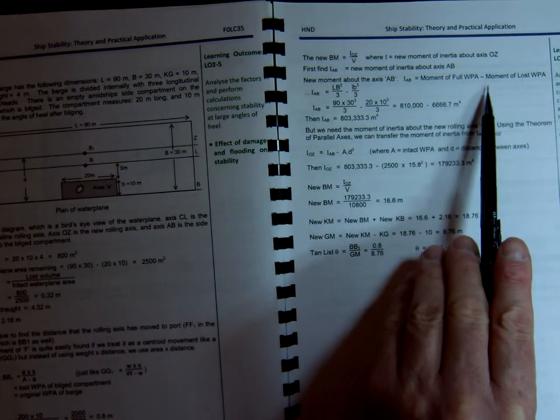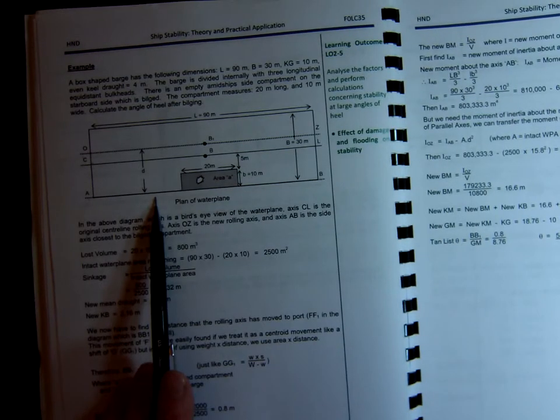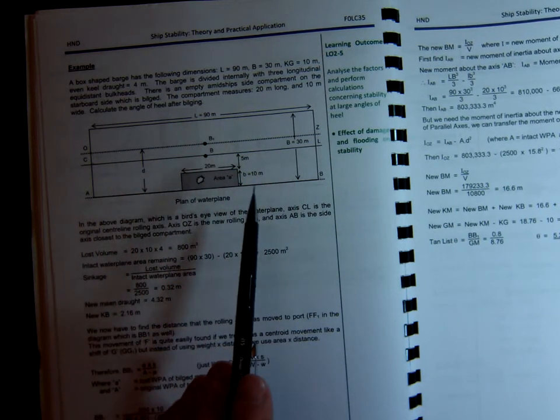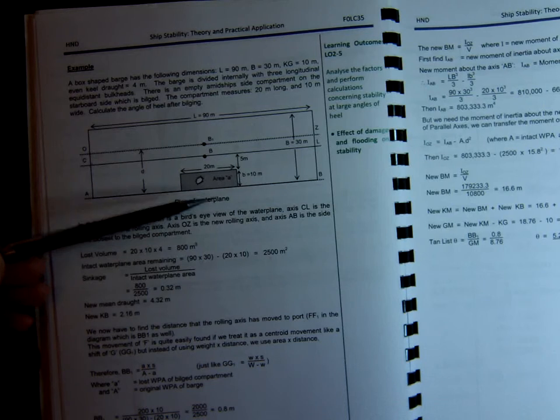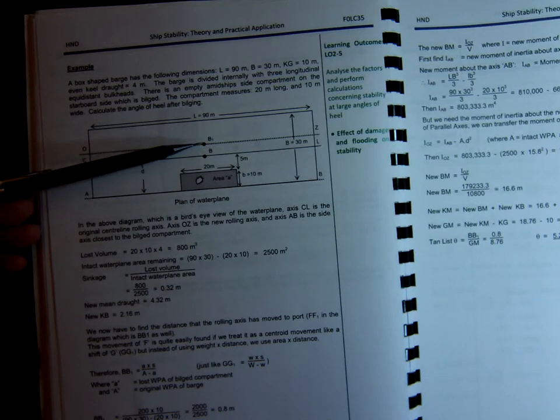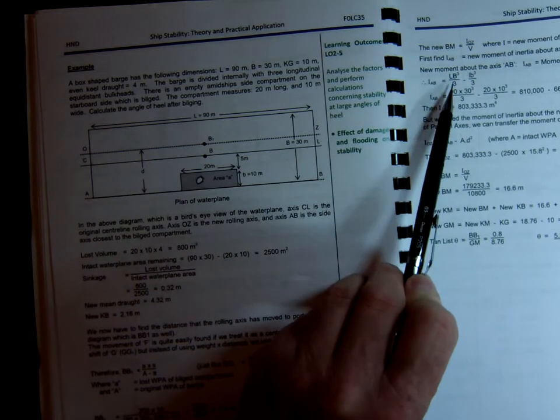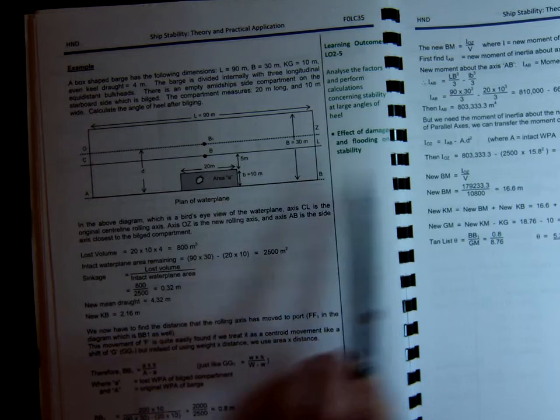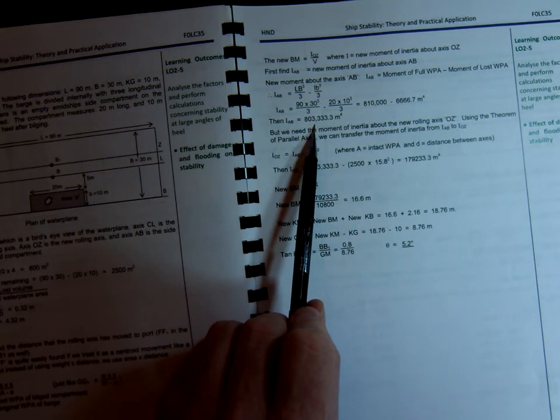So the new moment about the axis AB is the moment of the full water plane area minus the lost water plane area. This is why we have to do this first. So in other words, IAB is large LB cubed over 3. It's LB cubed over 3 because it's the outer edge, rather than LB cubed over 12 in the center with a normal box shape. So LB cubed over 3, large LB is 90 times 30 cubed over 3, minus the small LB cubed, which is 20 by 10 cubed over 3. So put that in your calculator, and it works out that the moment of inertia about the AB axis is this large figure here.